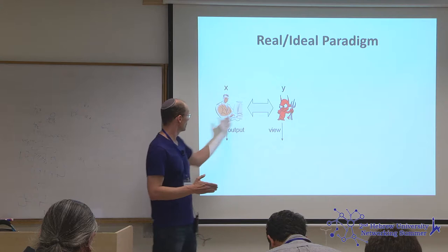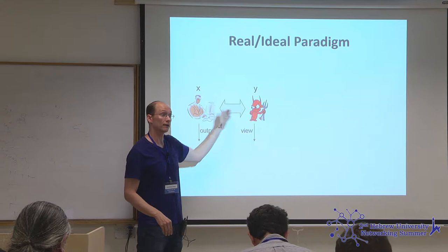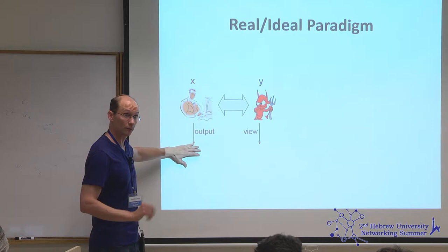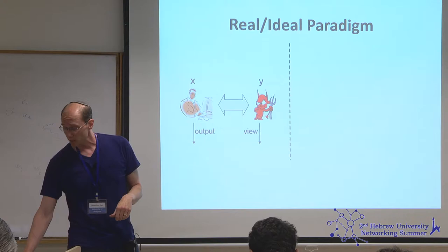The malicious party — indicated by a devil — obtains some view of the protocol execution based on all the messages it received. The honest party generates an output according to what the protocol specifies; the attacker takes the view of the protocol execution, which is the sum total of everything it could possibly learn. We compare that to an ideal world where those parties have access to a trusted entity.